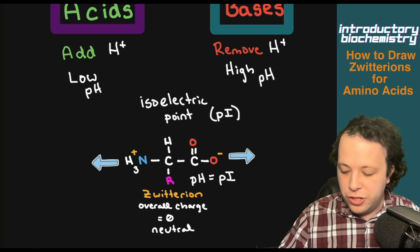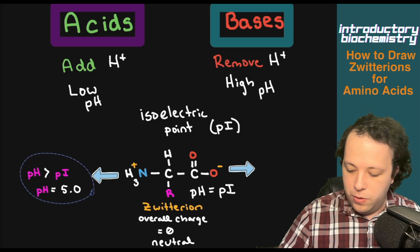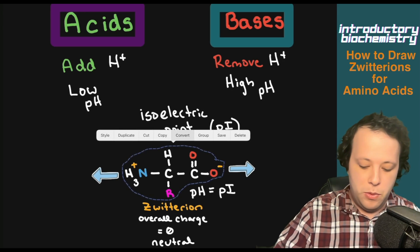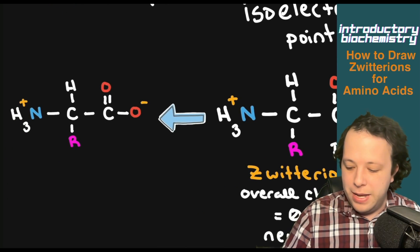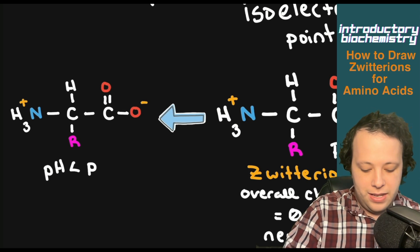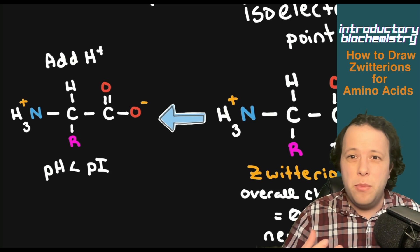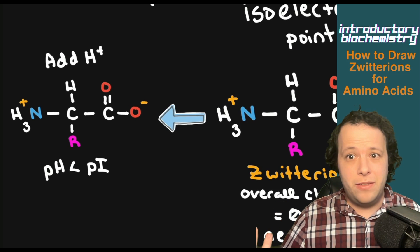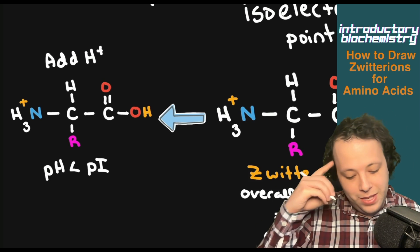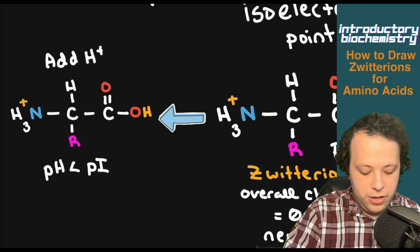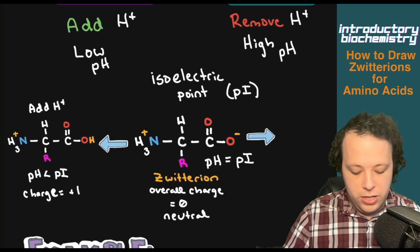How will the structure change if we go in both directions? Remember: add hydrogen or remove hydrogen. If we go more acidic — pH less than the PI — we are going to add hydrogen. Where can you add an H+? The thing that most likely wants to accept an H+ is the negative area. So we add a hydrogen to that negative area on the carboxylate group. As a result, the overall charge becomes plus one under acidic conditions.